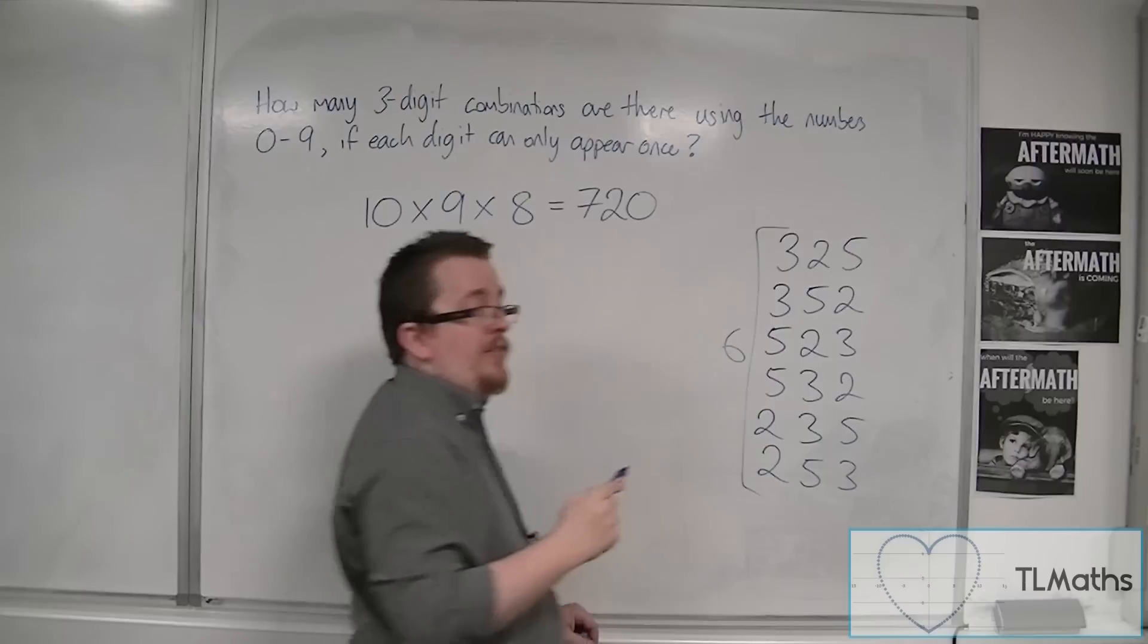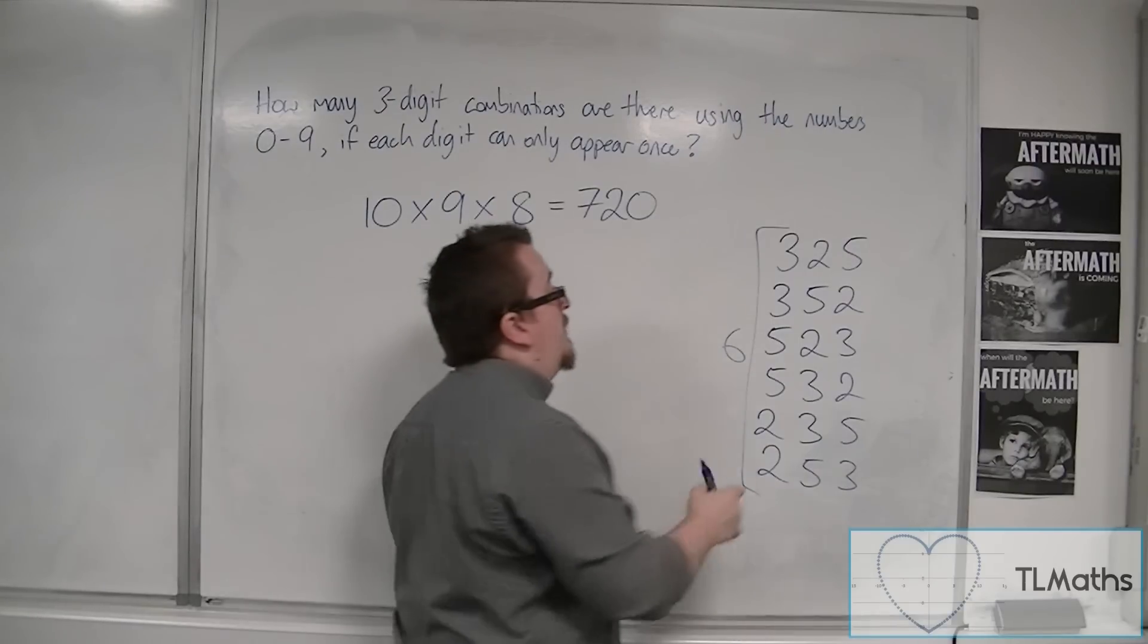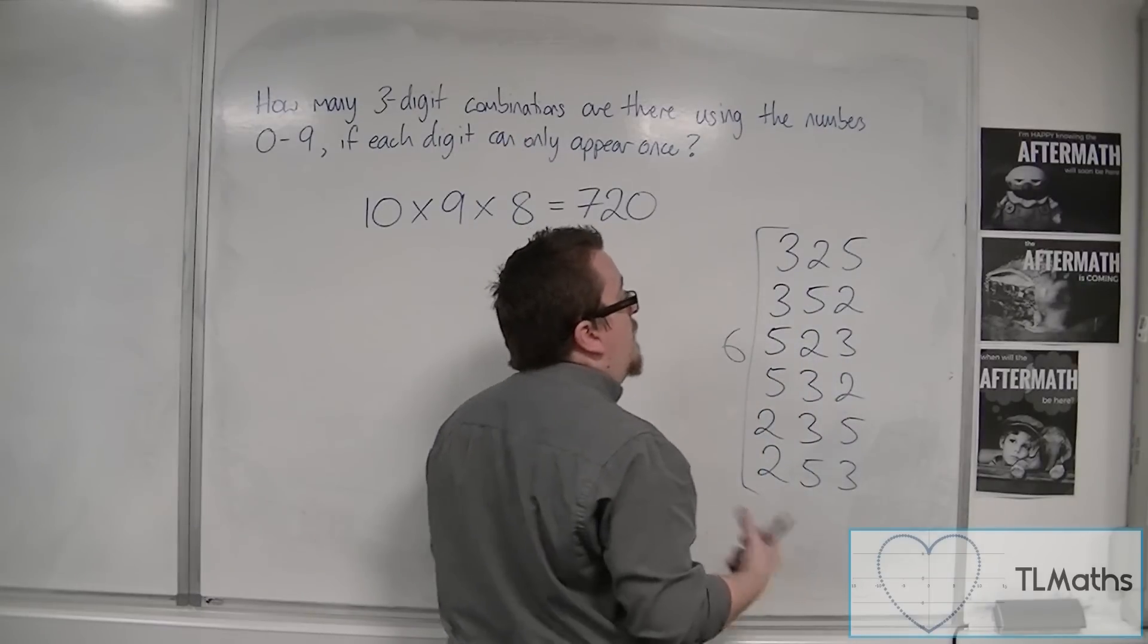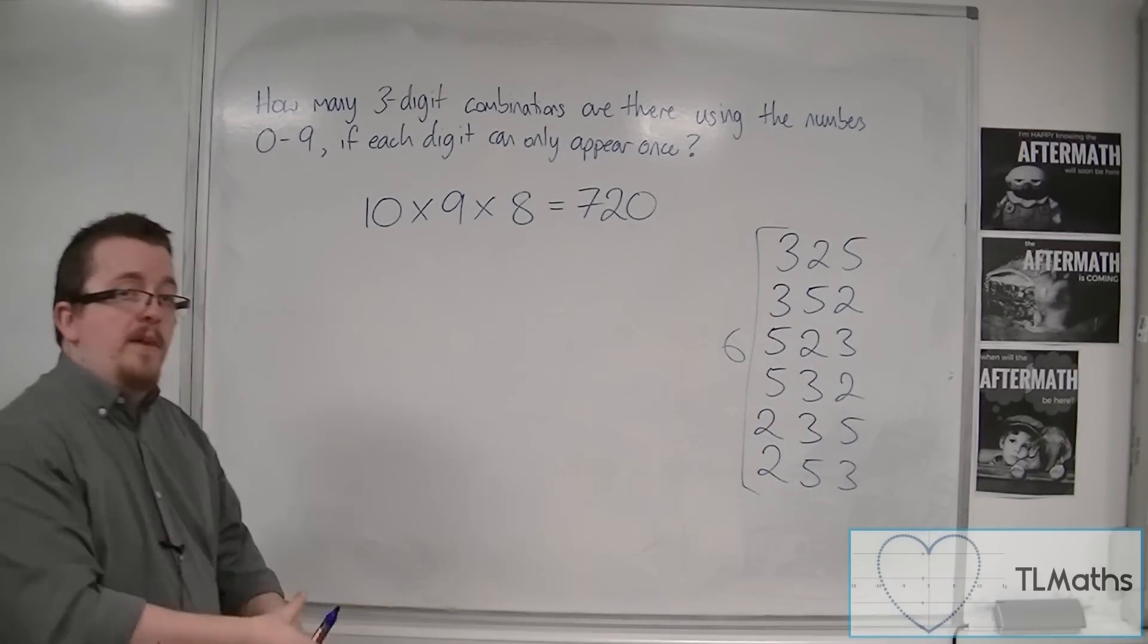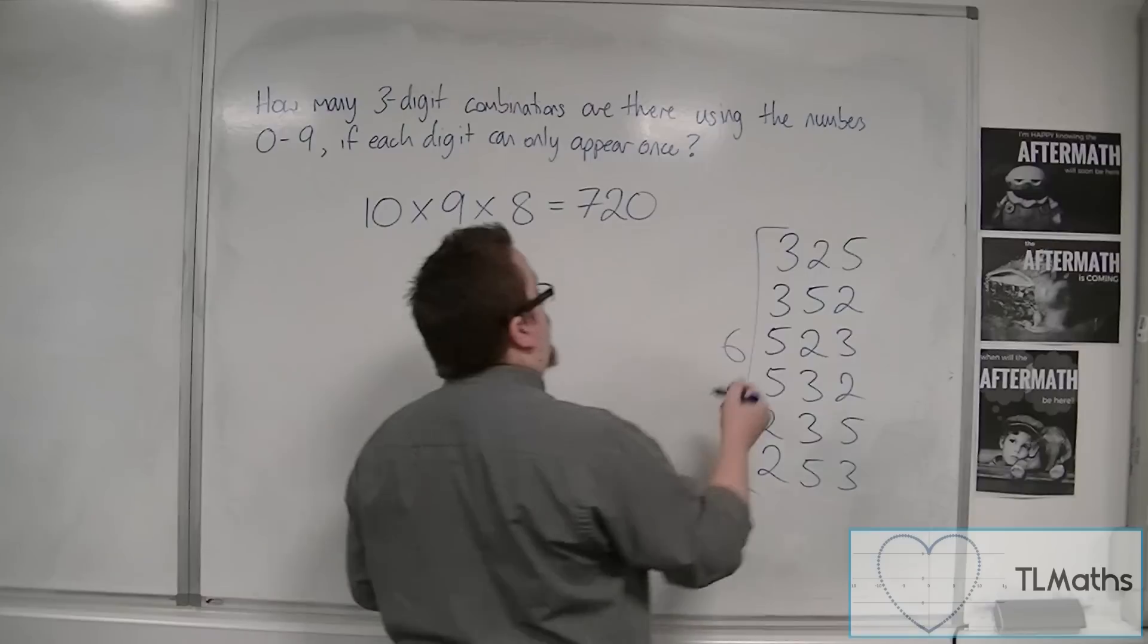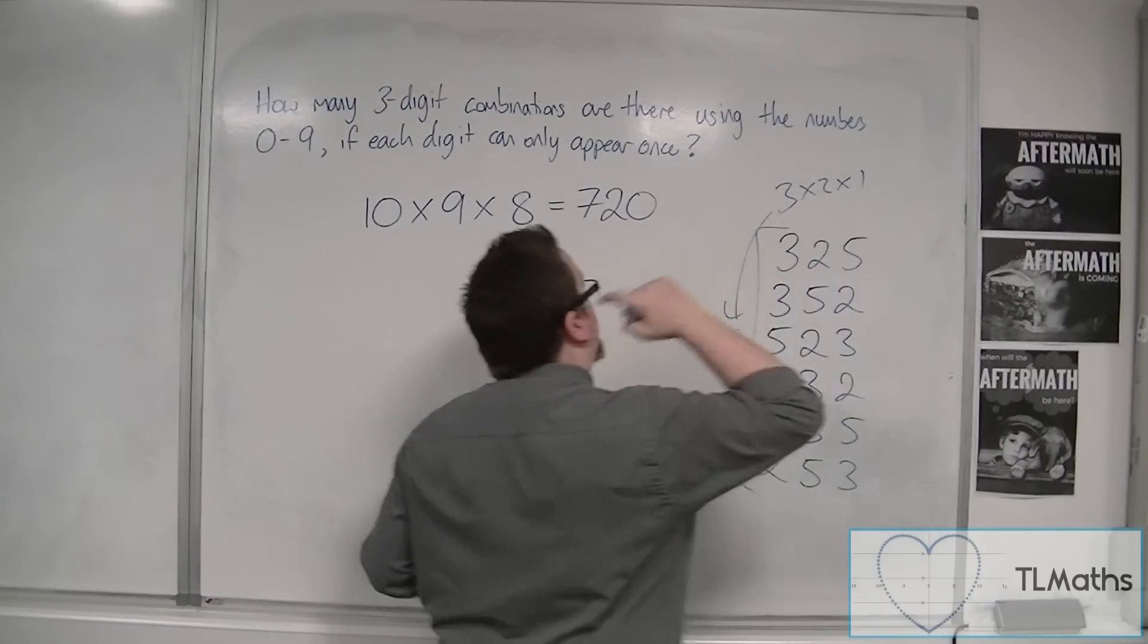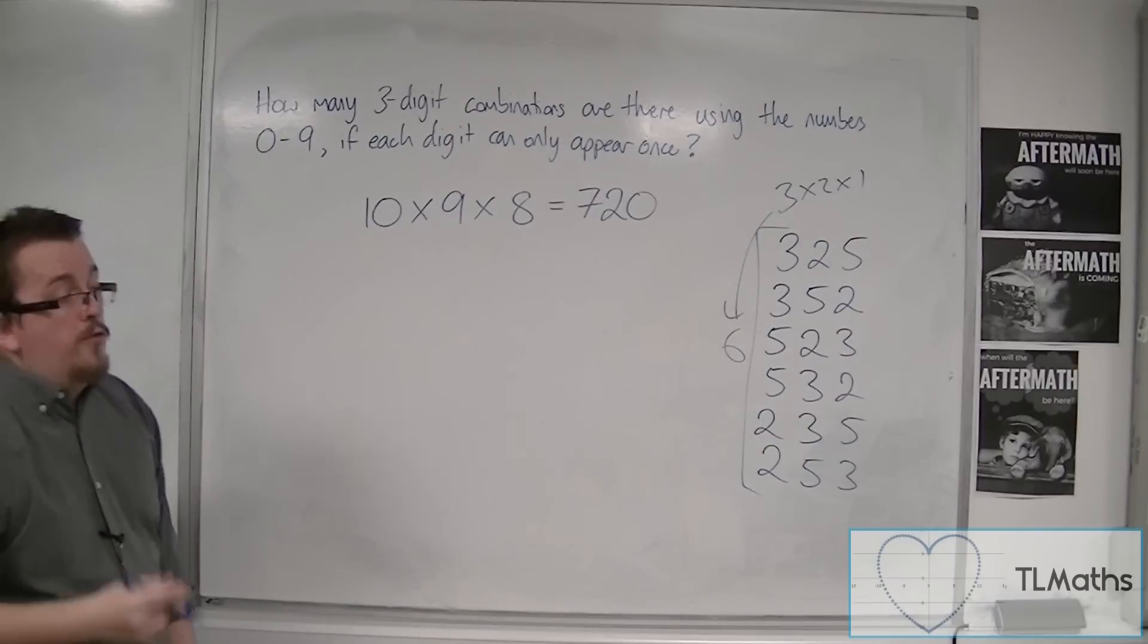And that makes sense because you had three choices for the first number, 3, 5, or 2. Then we would have had two choices. Then we would have had one choice. So 6 is coming directly from 3 times 2 times 1, or 3 factorial.